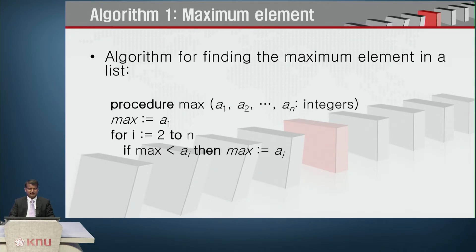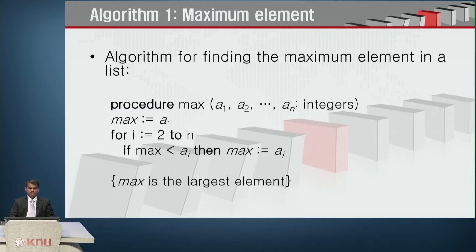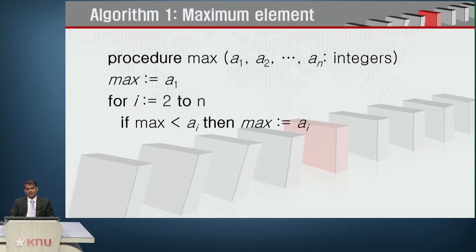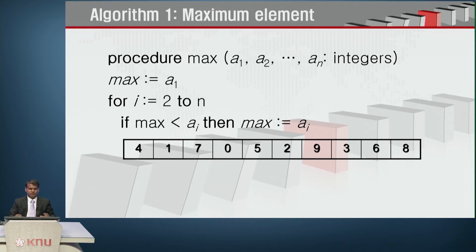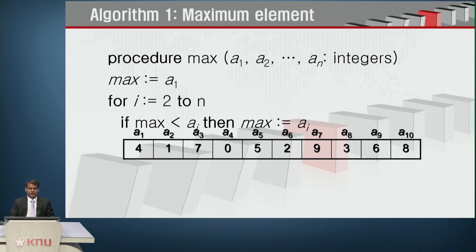The procedure is given: find the maximum value from a1, a2, through an integers. We set the initial maximum to a1, then run a for loop from i equals 2 to n. Inside the loop, if maximum is less than a_i, then maximum equals a_i. We name the elements a1 through a10.